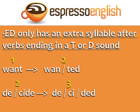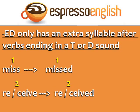Let's review. ED only has an extra syllable after verbs ending in a T or D sound. WANT → WANTED, DECIDE → DECIDED. With these verbs, the ED adds an extra syllable. In all other verbs, the ED does not add an extra syllable.